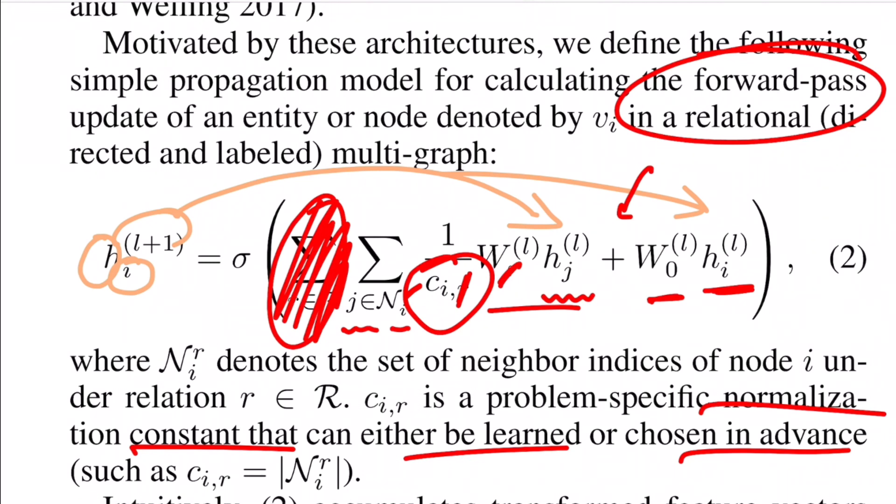So this is not exactly same as the transformation that you do for the neighboring nodes. So again, the basic intuition behind this is that the previous representation of the same central node might have more contribution compared to just the neighboring nodes when it comes to identifying its representation at L+1th layer. So that's why we give this liberty and we learn this matrix separately. So once this internal equation is solved, we pass it through a non-linear function and get the representation of the central node I for the next layer.